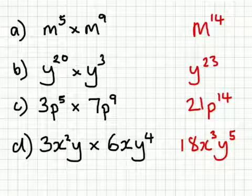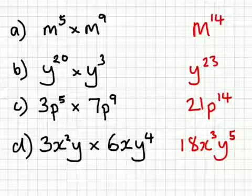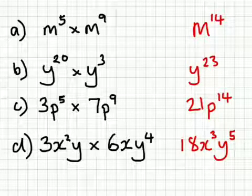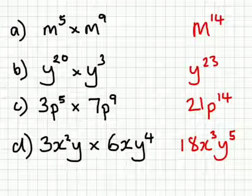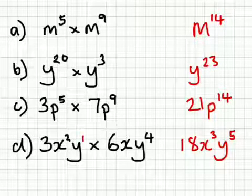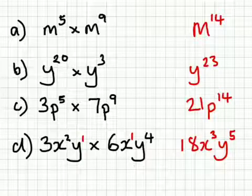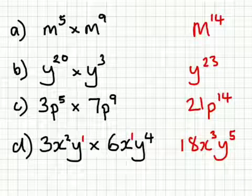What you needed to remember on the last question here is that when there's no power next to the letter, so you have the y and the x without a power next to them, they would normally have a 1 here and a 1 here, but we don't write those. So really, you do the working out assuming that there's a 1 there.